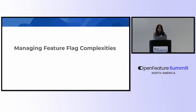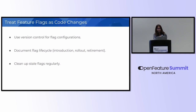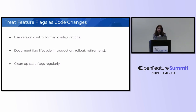Now let's see how we can manage these complexities. First, use version control for flag configurations — storing flag configurations alongside the codebase in version control can help track code changes in versioning as well. Second, document the flag lifecycle: introduction, rollout, and retirement. Documenting the flag lifecycle can reduce misuse and also help clean up stale flags. Third, clean up stale flags regularly — if you have stale flags in your code, it can increase the burden on developer teams.